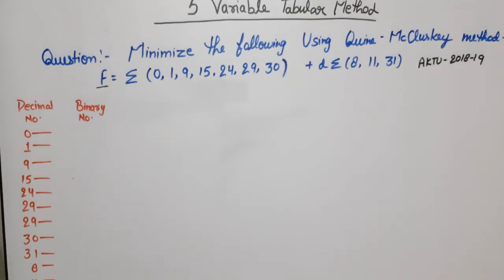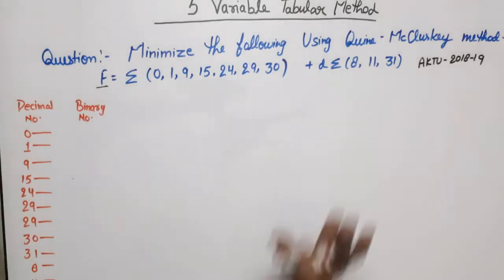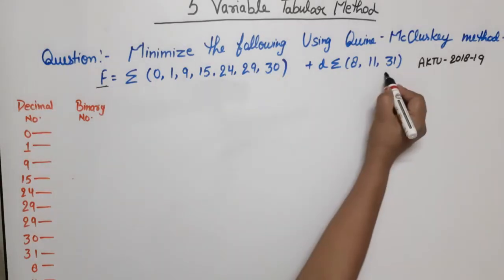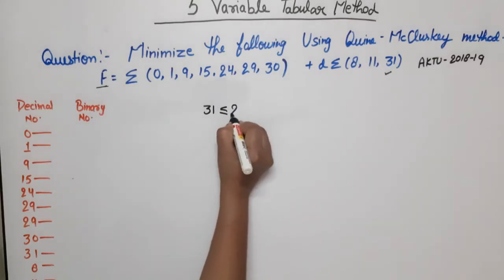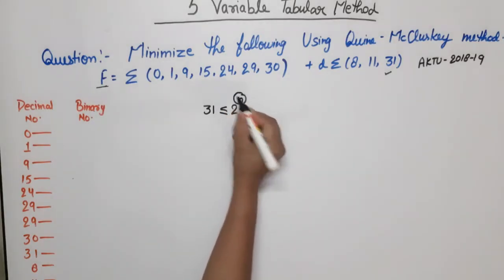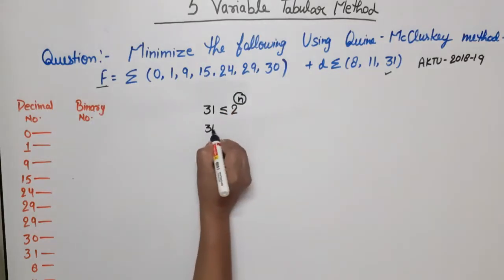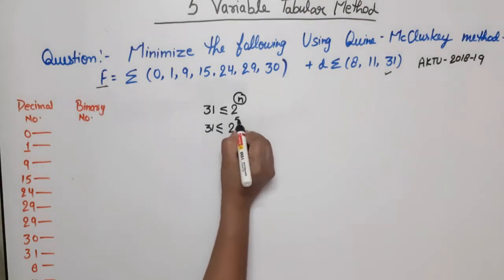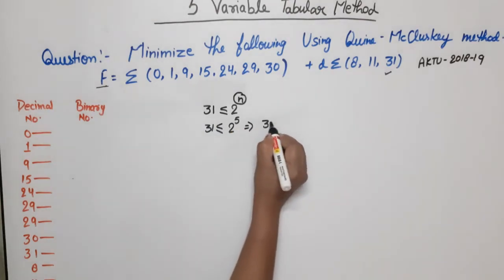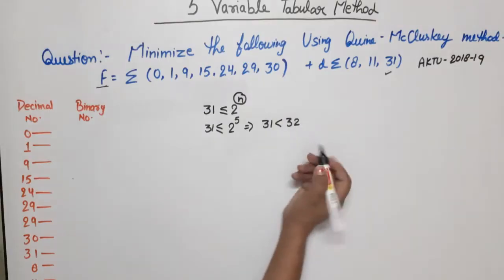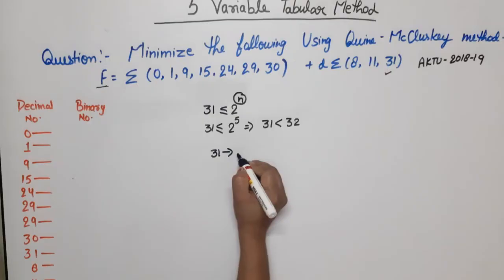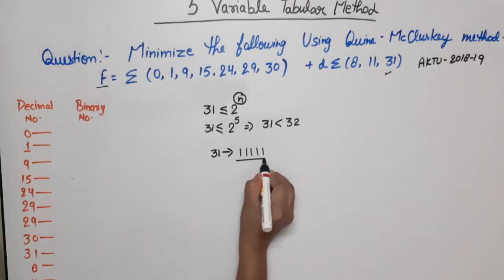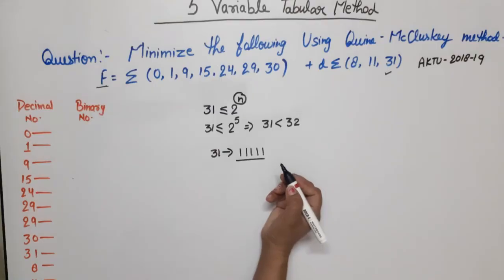How do you find the number of variables? The maximum minterm value is 31. That should be less than or equal to 2 raised to the power n, where n is the number of bits. If we put n=5, then the condition is satisfied: 31 is less than 32. Also, if you convert 31 to binary, 5 bits are required — meaning 5 variables.